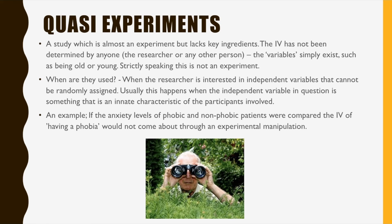Finally, quasi-experiments. These are studies which are almost experiments but lack key ingredients. The IV has not been determined by the researcher or any other person — the variables simply exist, such as being old or young. Strictly speaking, it's not a true experiment. They're used when the researcher is interested in independent variables that cannot be randomly assigned, usually because the IV is something innate or characteristic of the participants. For example, if the anxiety levels of phobic and non-phobic patients were compared, the IV of having a phobia would not come about through experimental manipulation.